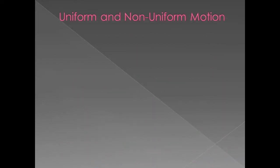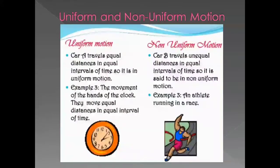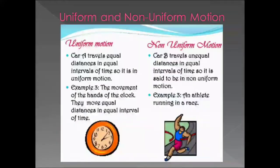Uniform and non-uniform motion. When an object covers equal distances in equal intervals of time, its motion is called uniform. If these distances are unequal, then the motion of the object is called non-uniform motion.